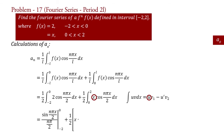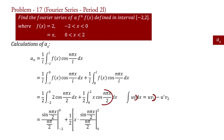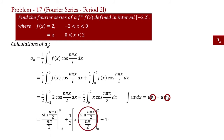Since v equal to cos(n pi x upon 2), therefore we write sin(n pi x upon 2) upon (n pi by 2) with limit 0 to 2, minus u-dash, that is differentiation of x which is 1. So we write 1 into v2, that is integration of v1, that is integration of sin(n pi x upon 2) upon (n pi by 2). So we write minus cos(n pi x upon 2) upon (n pi by 2) squared with limit 0 to 2.